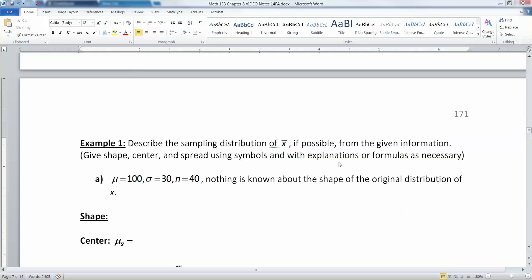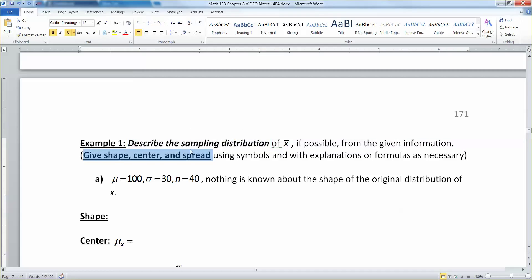Now that we understand the central limit theorem for sample means, we want to apply it. We're going to try to describe the sampling distribution of x-bar, which is the sample mean, if possible from the given information. When we say describe the sampling distribution, what we really mean is give the shape, center, and spread using symbols and explanations and formulas if necessary.